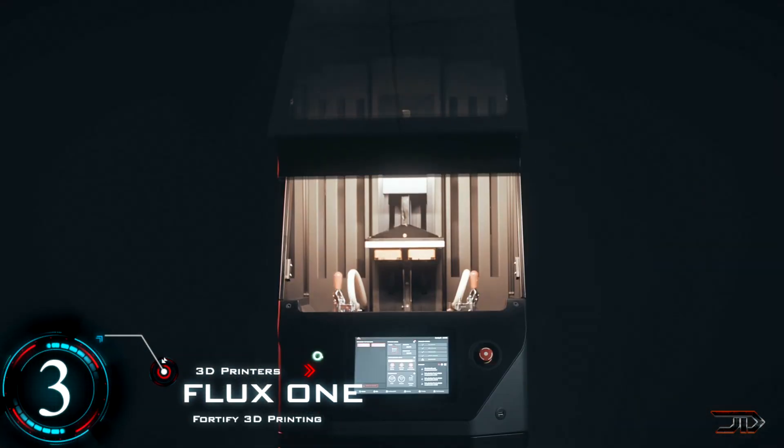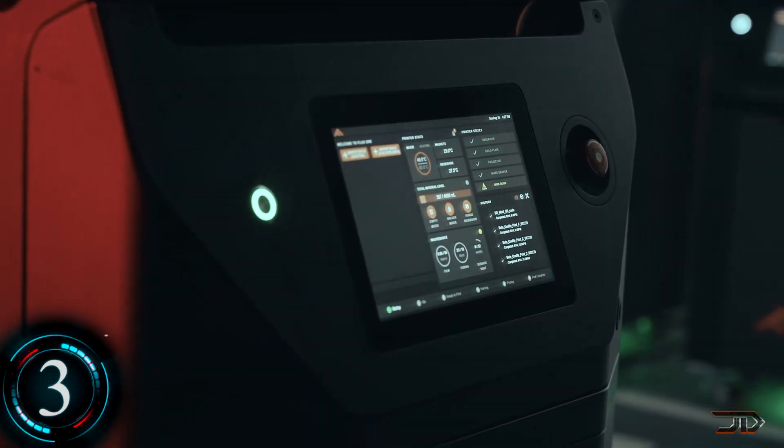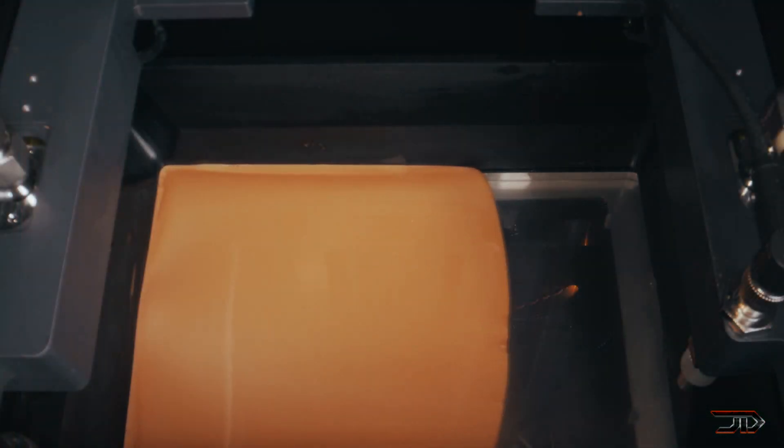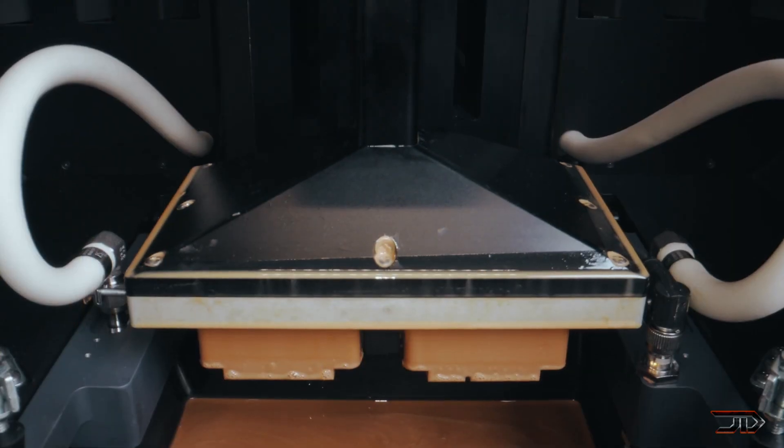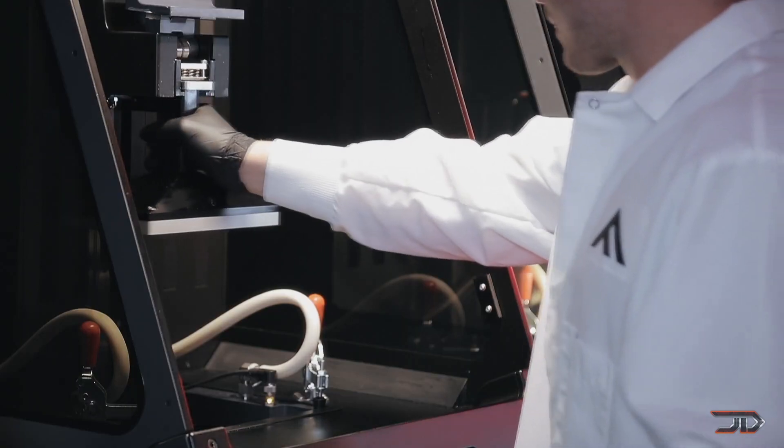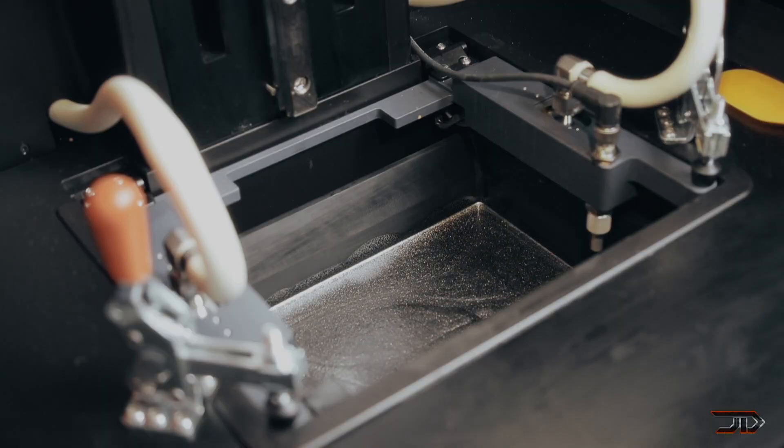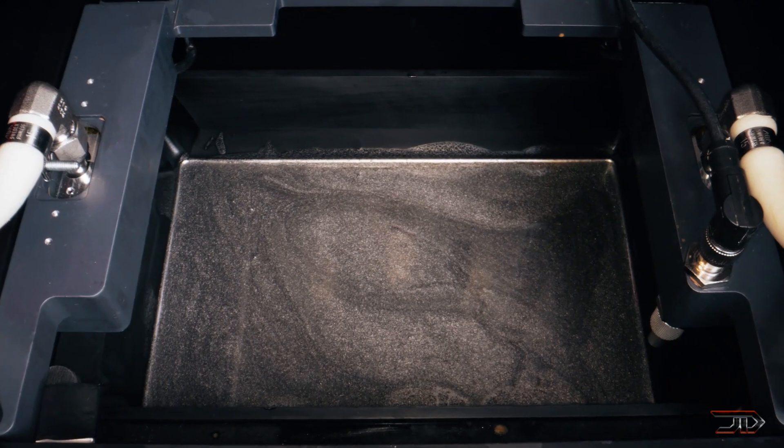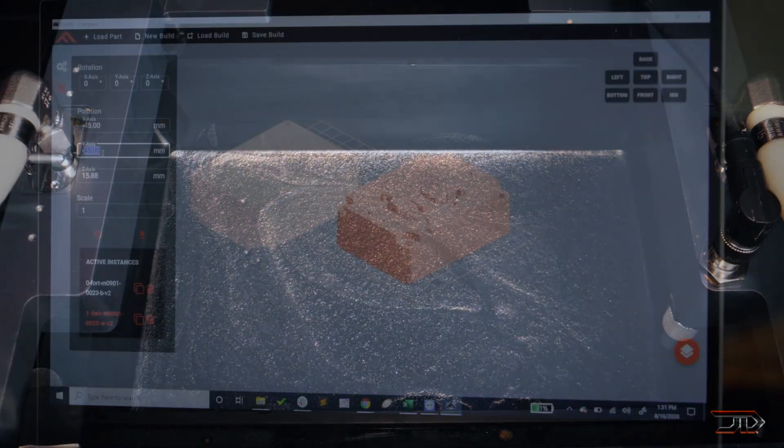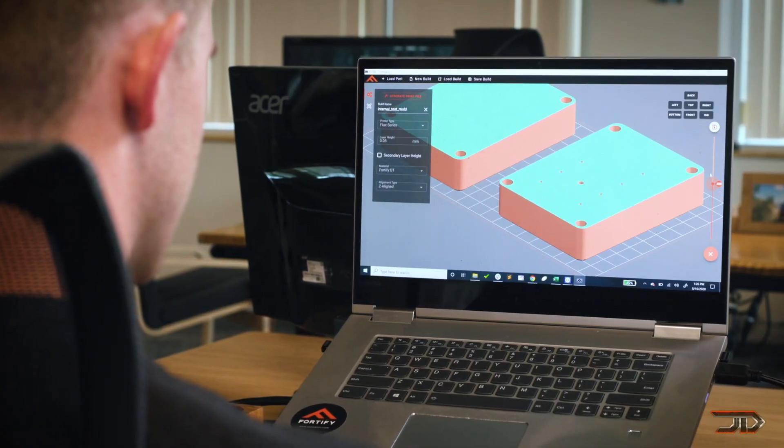Moving on to number three, and it's the Fortify Flux. This can be considered a next-generation DLP fiber printer. The flux combines magnets with digital light processing to align fibers, allowing for an increase in durability, strength, and stiffness. It does this in the Z dimension, going all the way down to 25 microns, with a flux density of 600 gauss. Users can also tune properties for different regions of a part. One example of this would be directing electrical conductance to a certain area.